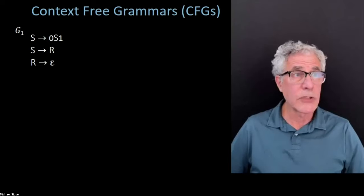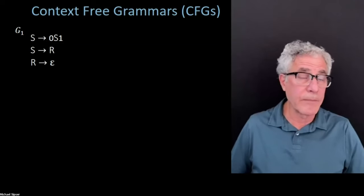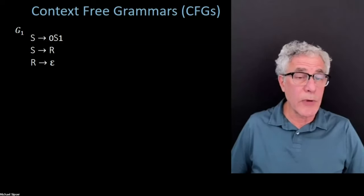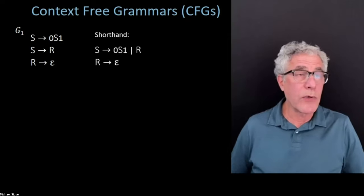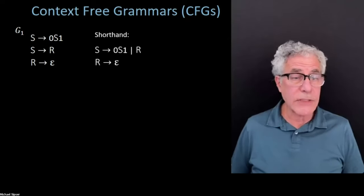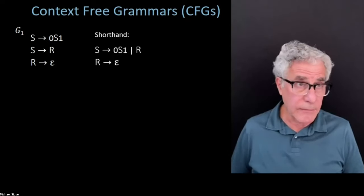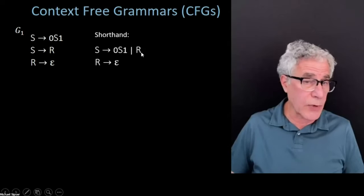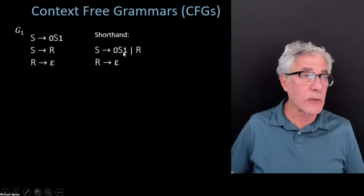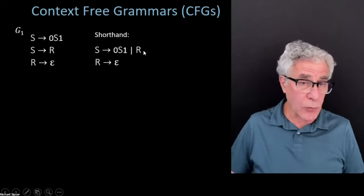Just to refresh your memory, here was that example of a context-free grammar from last time. The way we write context-free grammars uses a shorthand: when you have multiple rules with the same variable on the left-hand side, you can combine them into one line. So these two rules—S goes to 0S1, and S goes to R—can be written compactly as S goes to 0S1 or R. This is really two rules written on one line.